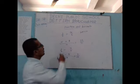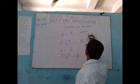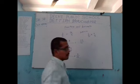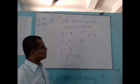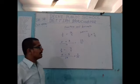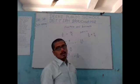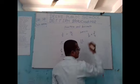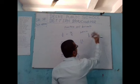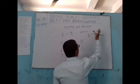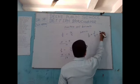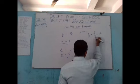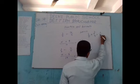To multiply 3 by 2 into 4 by 5, first check if any number can be cancelled. Then multiply the numerators together and the denominators together to get the answer.